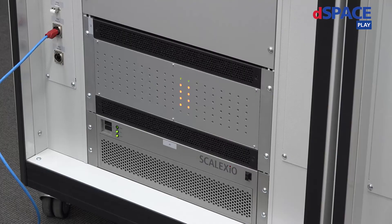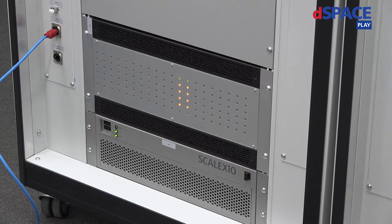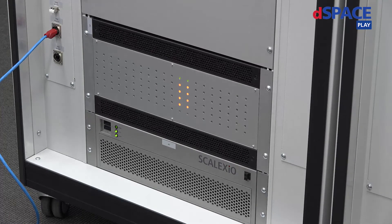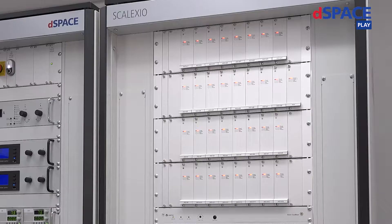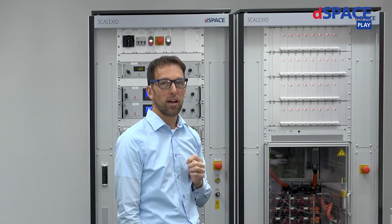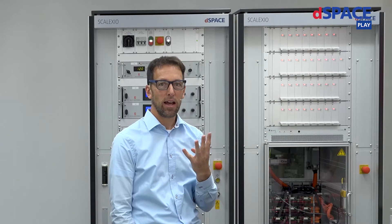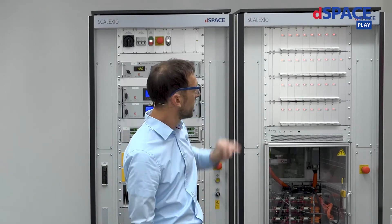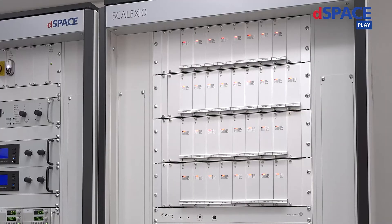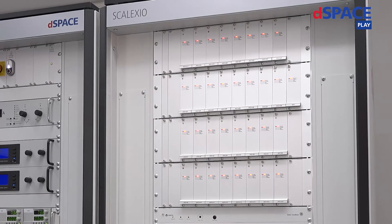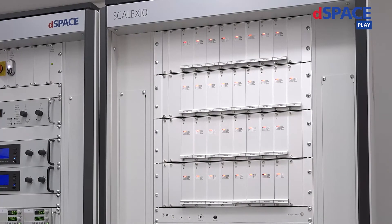Okay, then we have got on the bottom here the real-time system. Here it is used as a Calexio system with some I.O. boards. And in the next cabinet, we have got the high voltage emulation boards. So, one board is able to emulate four battery cells. And we have got here 32 boards. So, in total, we are able to emulate 128 cells with this kind of hardware setup.